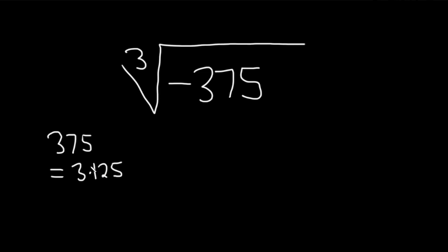So now what we can do is we can write 125 as a power of 5. This is really 3 times 5 cubed. That's because 5 cubed is 125.